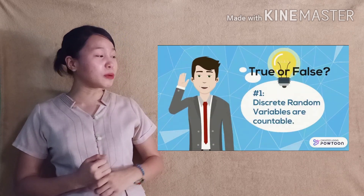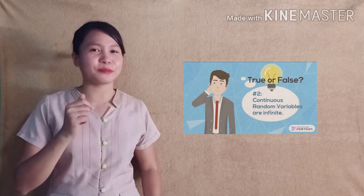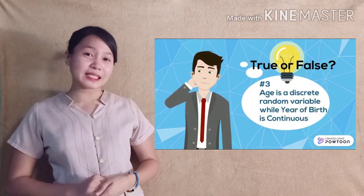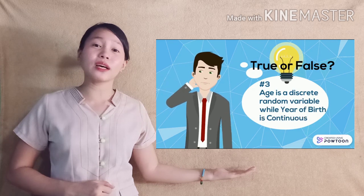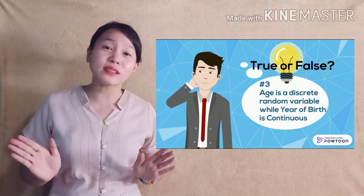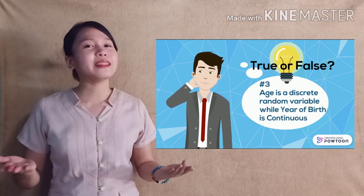So let us go back to our pre-assessment. This time, I would like you to check all of the correct answers. Number 1: Discrete random variables are countable. It's true. Number 2: Continuous random variables are infinite. Again, it's true. And lastly, age is a discrete random variable while year of birth is continuous — no, it's false. Why? Because age is a continuous random variable while year of birth is discrete.